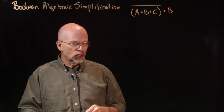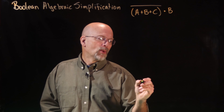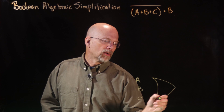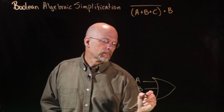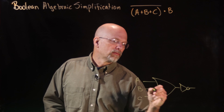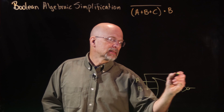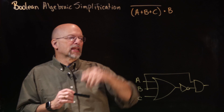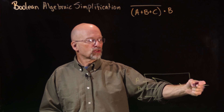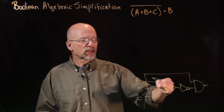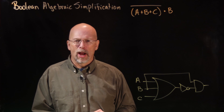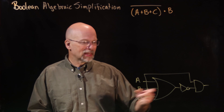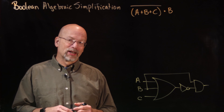Let's take a look at the actual circuit. What I have is A, B, C going into an OR gate, then going through an inverter, and then B is coming out and being combined with an AND gate. This is the circuit represented by this expression. I can't distribute the AND across the OR because that inverter is in the way. We have to move that inverter before we can distribute the AND.